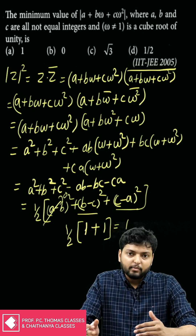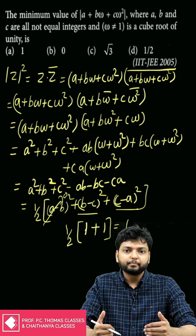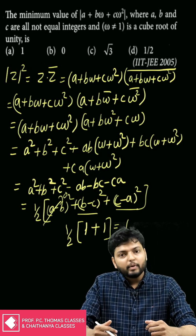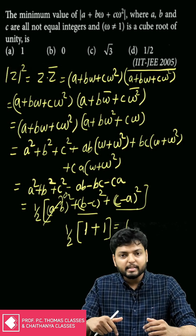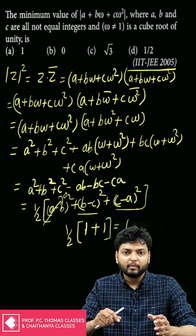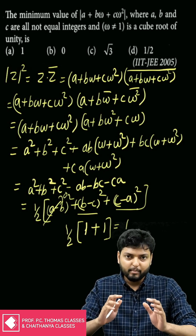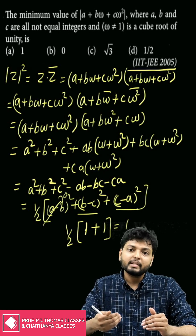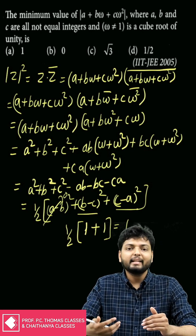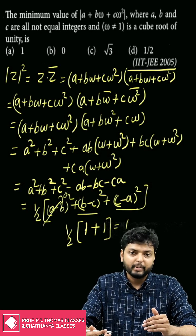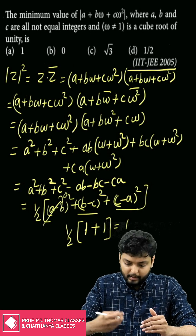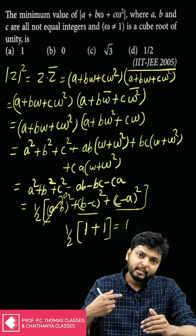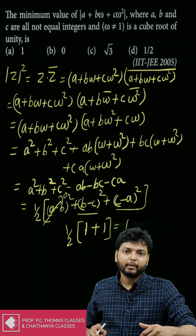Correspondingly, the minimum value of |z| is 1. In the next video, we will discuss a similar question using a similar idea, which was repeated in the 2019 JEE Advanced paper. We'll come up with the solution in the next video. Thank you.